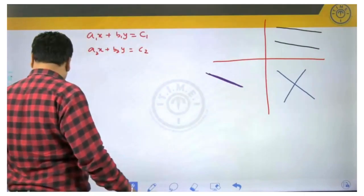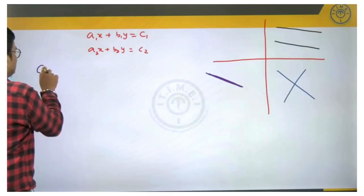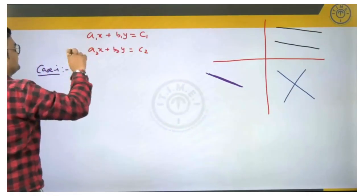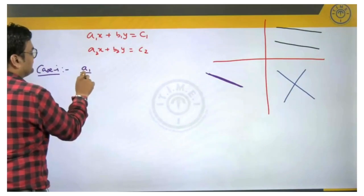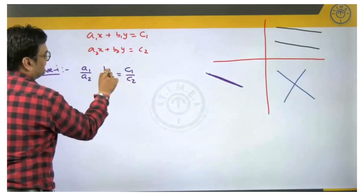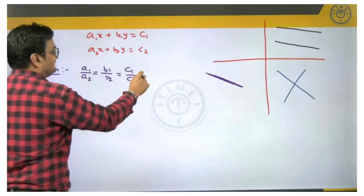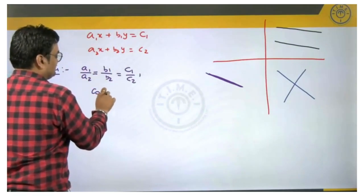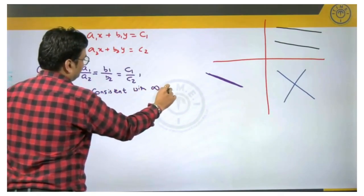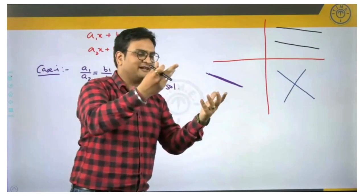These 3 cases correspond to 3 different algebraic conditions. Case 1 corresponds to the overlapping lines case: the condition is when the ratio of x coefficients equals the ratio of y coefficients equals the ratio of the constant terms — that is, a1/a2 = b1/b2 = c1/c2. When this happens, the set of equations is called consistent with infinite solutions, because the lines overlap and there are infinitely many solutions.